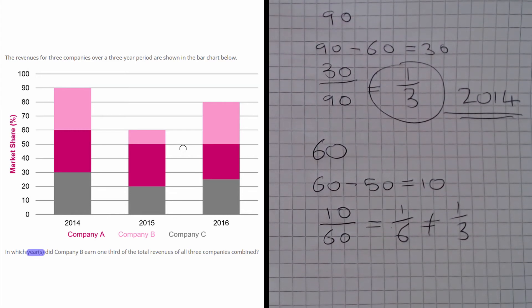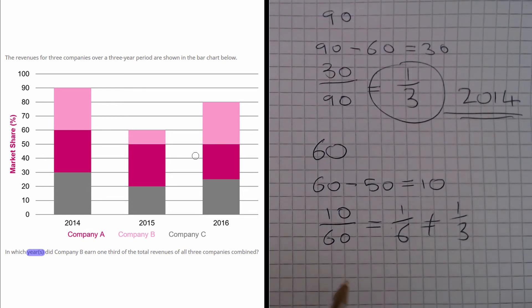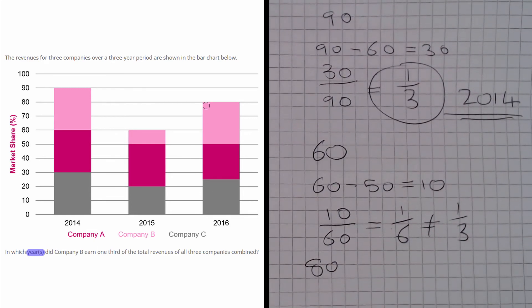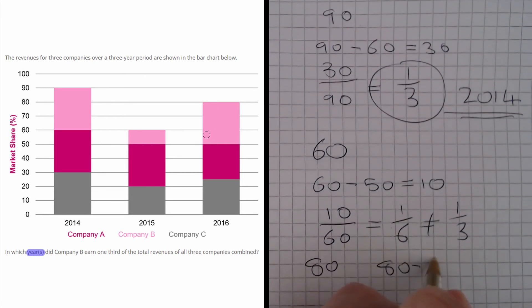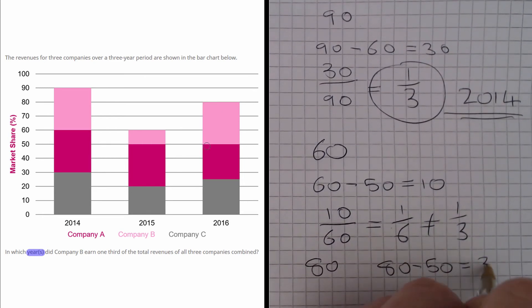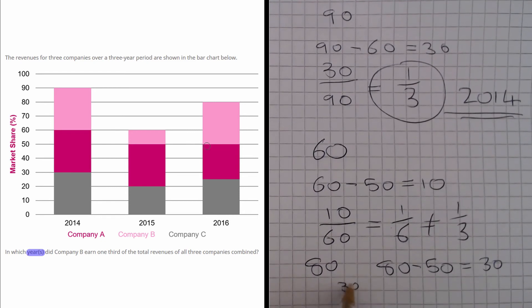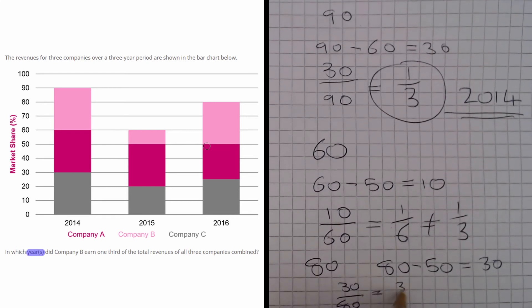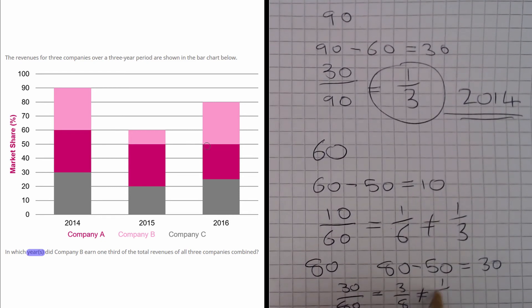And let's have a look at 2016. So the total height is 80, and Company B has between 80 and 50. So Company B has a height of 30. So we have 30 out of 80, which is 3 eighths, which does not equal a third.